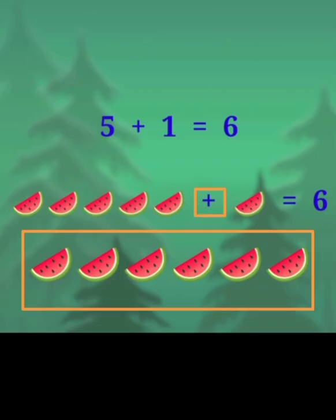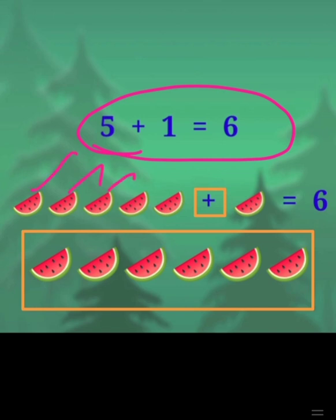5 plus 1 is equal to 6. How many watermelons are given here? 1, 2, 3, 4, 5. Plus adding 1 more. Totally how many watermelons? 1, 2, 3, 4, 5, 6. Totally how many? 6. 5 plus 1 is equal to 6.